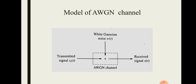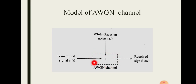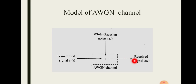The transmitted signal si(t) is shown here. Whenever it is transmitted through the channel, white Gaussian noise is introduced into the transmitted signal si(t), which is why it is called the AWGN — Additive White Gaussian Noise — channel. The received signal will contain si(t) plus the noise w(t), so the received signal is denoted x(t).